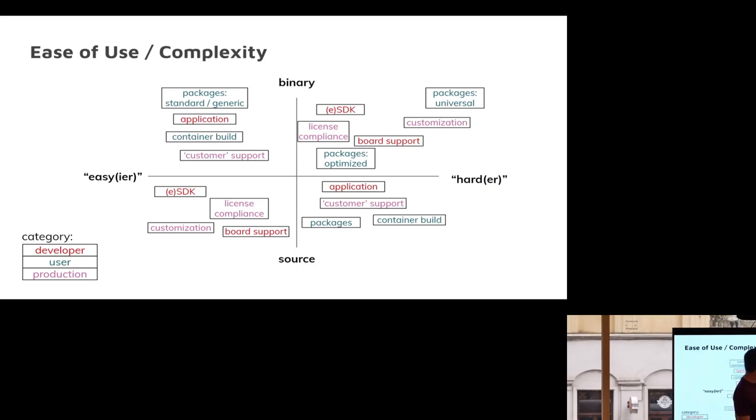Optimized packages are harder but not as hard. If you're doing binary, it's a little bit easier to do standard generic package applications, container building, customer support. The point of this slide is, depending on what you're most interested in in your project, it's probably easier to know if source is the way to go, or you might be able to benefit from a binary distribution and a reference feed. It is definitely not one size fits all.